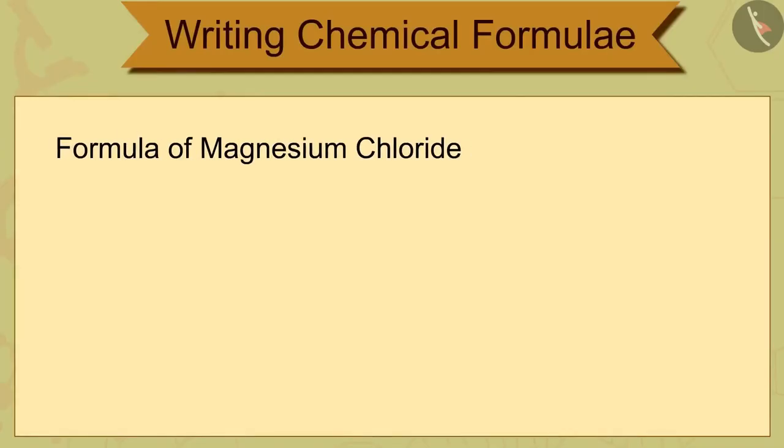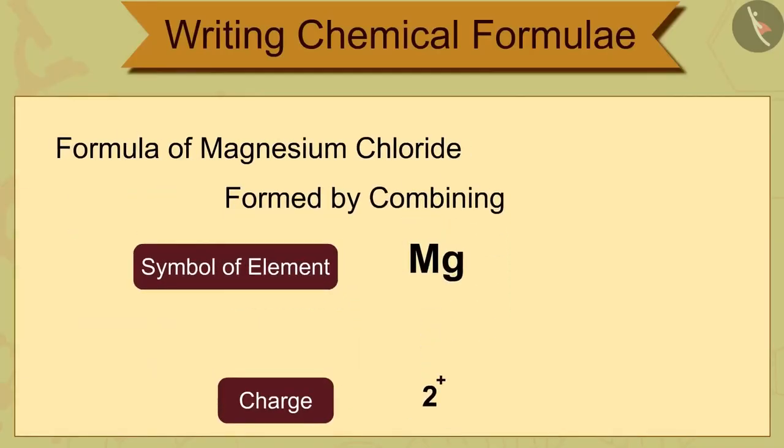Magnesium chloride compounds are formed by combining magnesium, Mg2 plus, and chloride, Cl minus ions.